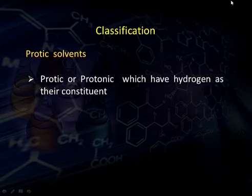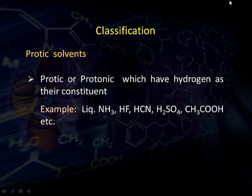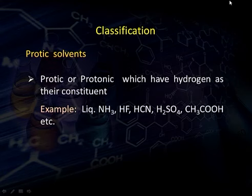Protic solvents, also called protonic solvents, have hydrogen as their constituent — meaning the hydrogen atom is present in the molecular formula. Examples include liquid ammonia, hydrogen fluoride, hydrogen cyanide, sulfuric acid, and acetic acid. All these contain hydrogen in their molecular formula.